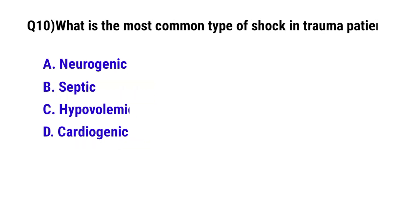Question No. 10. What is the most common type of shock in a trauma patient? The correct option is C: Hypovolemic shock.